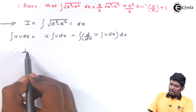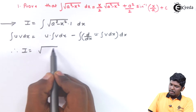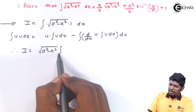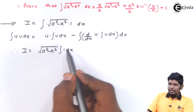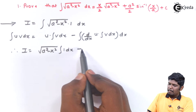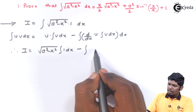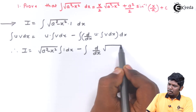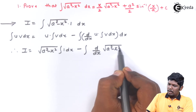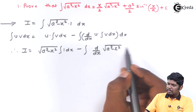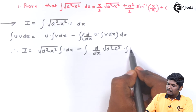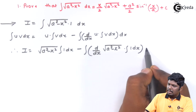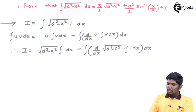Therefore, i is equal to √(a² - x²) × integral of 1 dx, minus the integral of d/dx of √(a² - x²) into the integral of 1 dx, the whole dx.